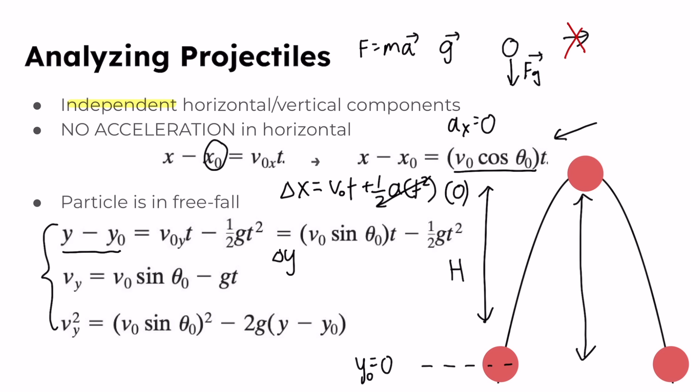Using the kinematic equation and substituting v naught sine theta naught for vy initial — just as we did for horizontal displacement — we can find the maximum height the projectile reaches. You can apply this substitution approach to all the other vertical motion equations as well. We'll be looking at practice problems in future videos to help you apply these equations to projectile motion problems.